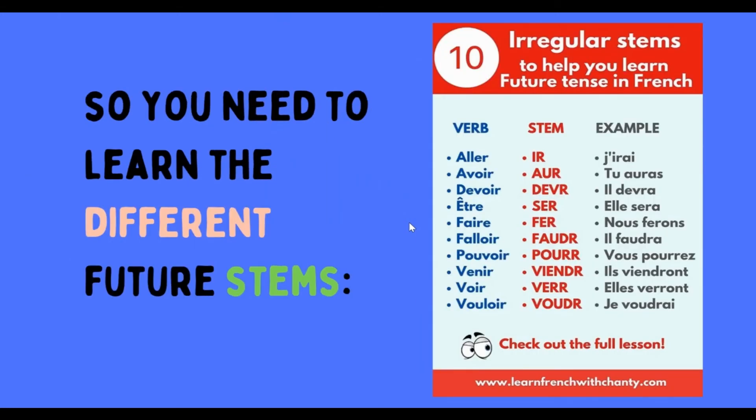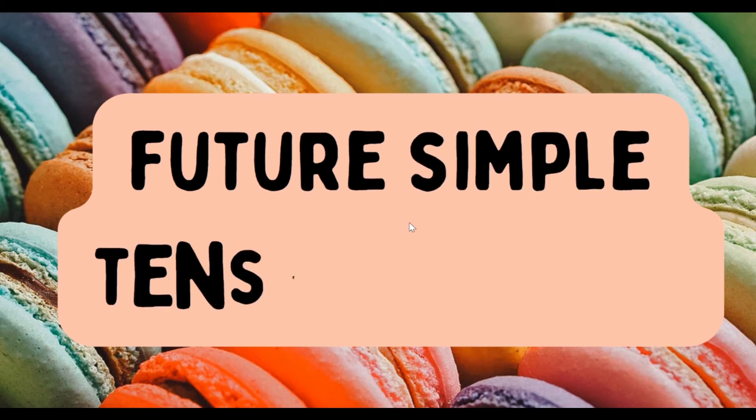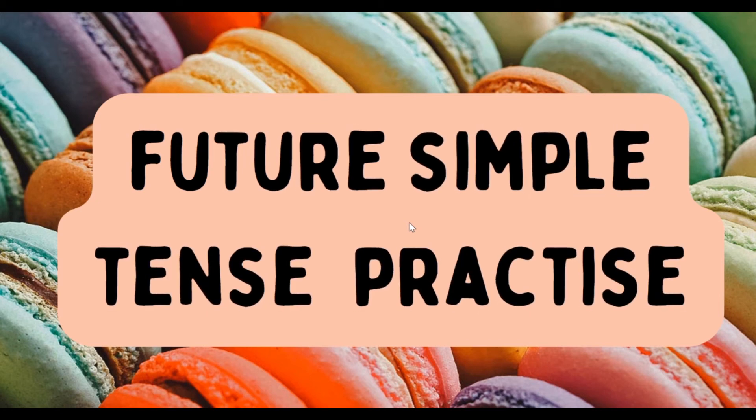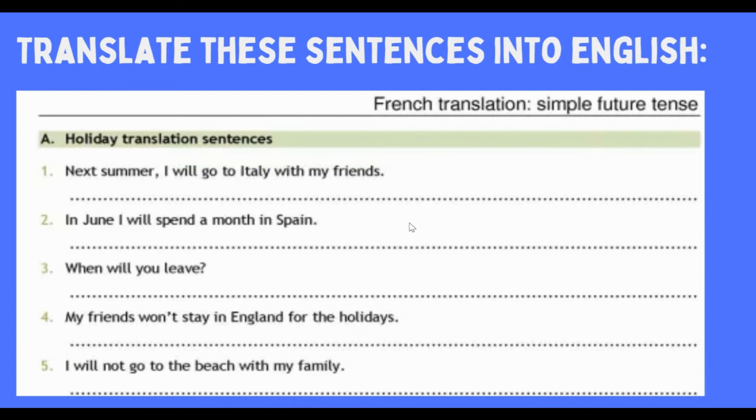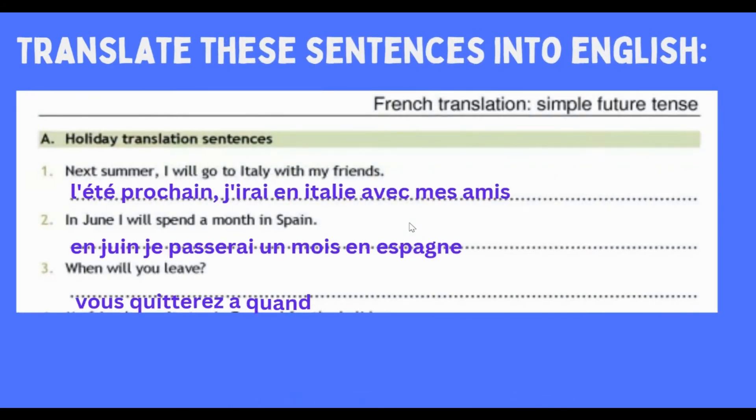Now let's look at some future simple tense practice. Can you translate these sentences into English? Pause to have a go and let's look at the answers. Next summer I will go to Italy with my friends: l'été prochain j'irai en Italie avec mes amis. In June I will spend a month in Spain: en juin je passerai un mois en Espagne. When will you leave: vous quitterez quand.